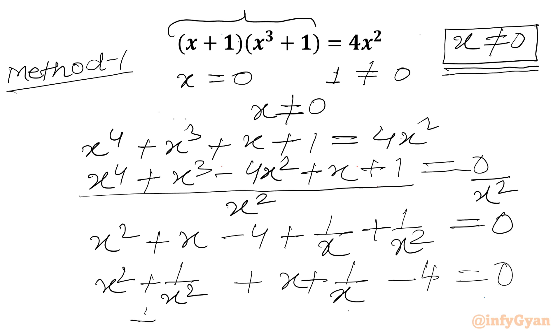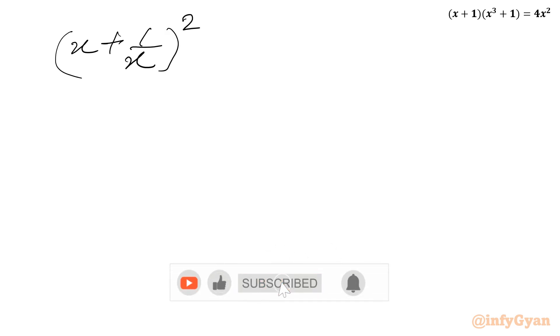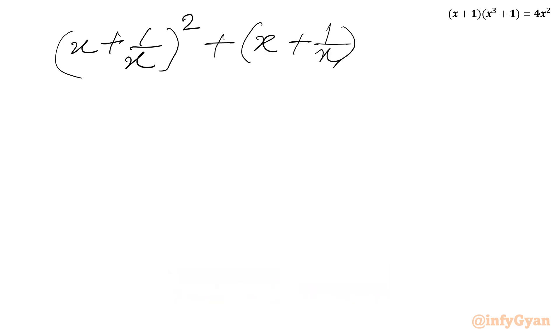Now add 2 and subtract 2. So these three terms — x² + 1/x² + 2 — will give us (x + 1/x)². So I can write (x + 1/x)² + (x + 1/x) - 6 = 0.